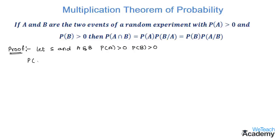By the definition of conditional probability, we have P(B by A) is equal to P(B intersection A) divided by P(A). By cross multiplying, we get P(B intersection A) is equal to P(B by A) into P(A).